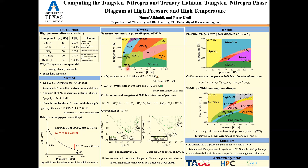It is important to mention that WN6 and WN8 were synthesized at 126 gigapascals and 105 gigapascals respectively, at a temperature of 2,000 Kelvin. Our computed phase diagram fits nicely with the experimental results, as you can see here. Another observation is the oxidation state of tungsten at 2,000 Kelvin as a function of pressure — as we increase the pressure, we increase the oxidation state of tungsten from plus 3 to plus 6.